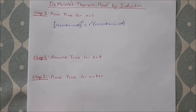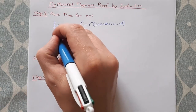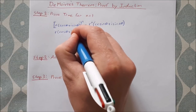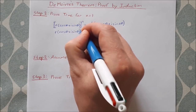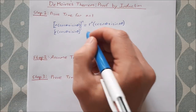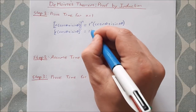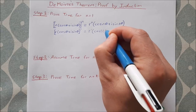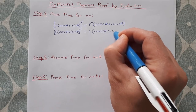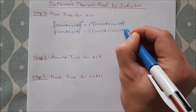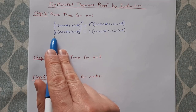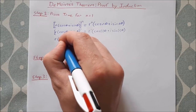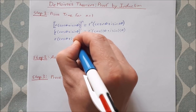Let's prove this true for n equal to 1. On the left-hand side I'd get r times cos theta plus i sine theta, all to the power of 1. Anything to the power of 1 is just itself, so that's r times cos theta plus i sine theta.